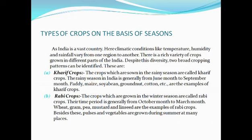Kharif crops are crops which are sown in the rainy season. The rainy season in India is generally from June to September. If we sow seeds during this period — June to September — the produce that comes out is considered a Kharif crop. Examples of Kharif crops are paddy, maize, soybean, groundnut, and cotton.